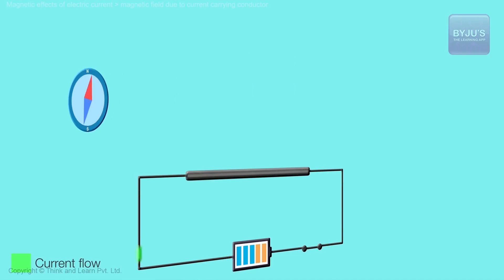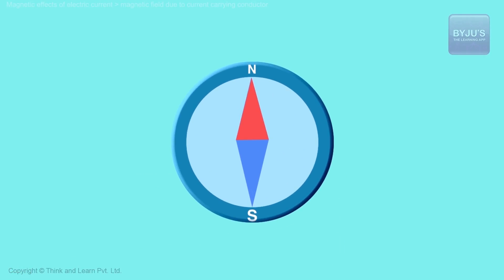And he started playing with this. He started taking it further and further away. The effect wasn't much. He brought it closer and closer. It started turning more. Then he switched off the power and all of a sudden it went back to the old position it points to, which is north and south as it always does. Now this was very fascinating.